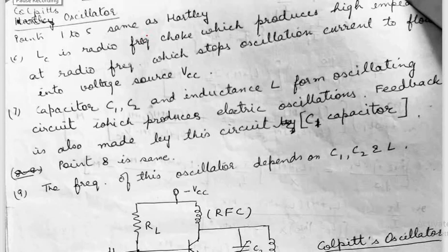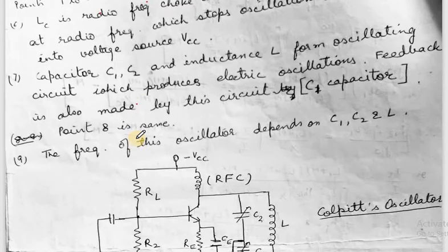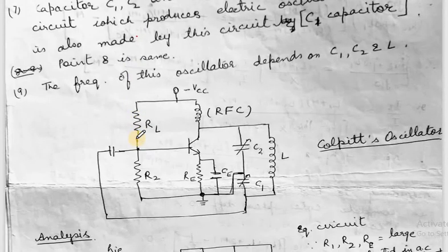Welcome students. I am Dr. Smita Sharma and today we will be discussing the Colpitt Oscillator. In the previous lecture we had discussed the Hartley Oscillator. Both of these oscillators are LC type oscillators. The Colpitt oscillator is different from the Hartley Oscillator because of its different tank circuit. First of all we will see its diagram.